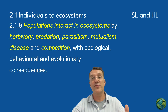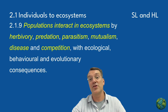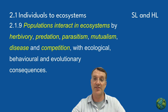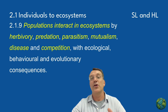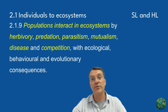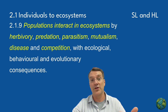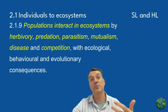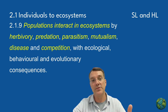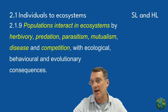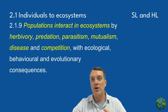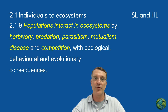There are a number of different population interactions you need to know in ESS: herbivory, predation, parasitism, mutualism, disease, and competition. Let's quickly go through each of those individually.